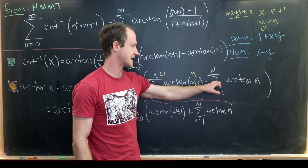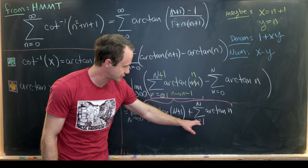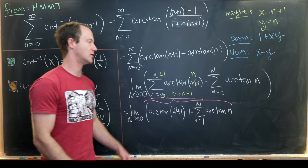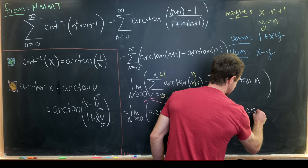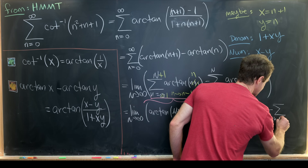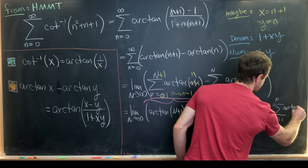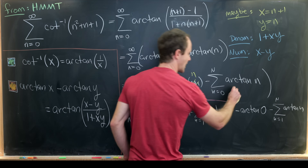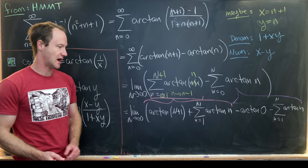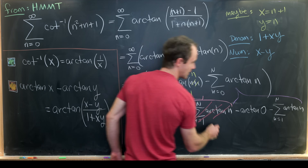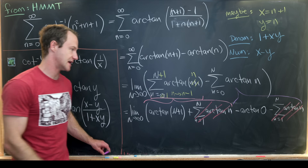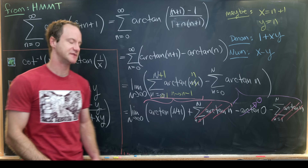We don't need to re-index the second sum, but we pull out the bottom term — the n=0 term, which is arctan(0). So we have: arctan(N+1) plus the sum from n=1 to N of arctan(n), minus arctan(0) minus the sum from n=1 to N of arctan(n). The two matching sums cancel. Since arctan(0) equals 0 (because tan(0) = 0), we're left with the limit as N goes to infinity of arctan(N plus 1).